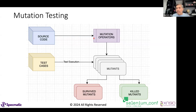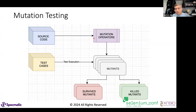Mutation testing takes your source code and mutates it — for example, turning an AND condition into an OR condition — producing 'mutants' of the code. It then runs your test cases against those mutants and expects your tests to 'kill' the mutants — meaning the tests should fail when run against the mutant, proving they can catch mistakes in the code.